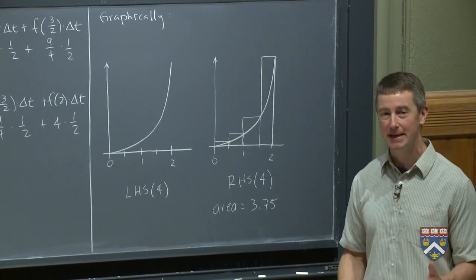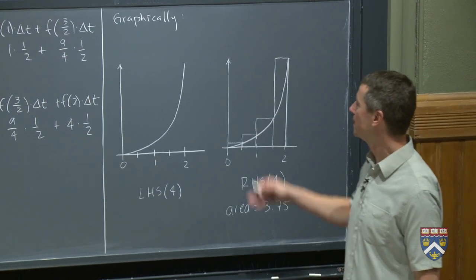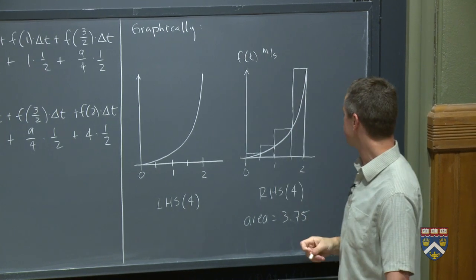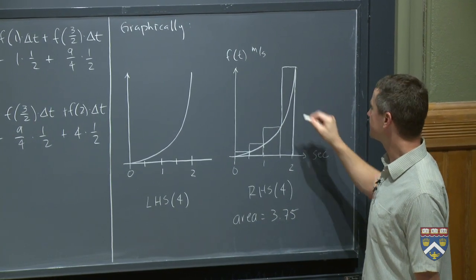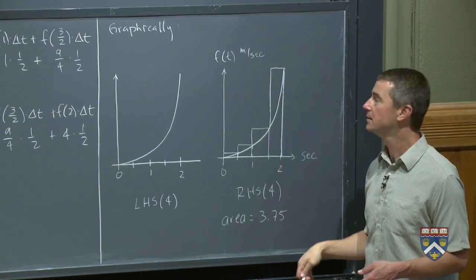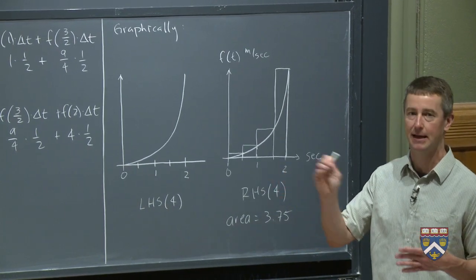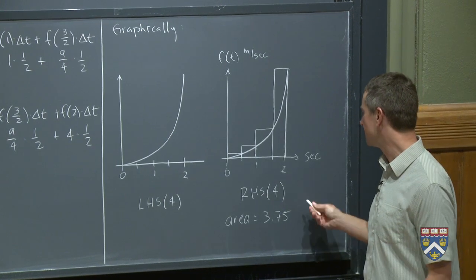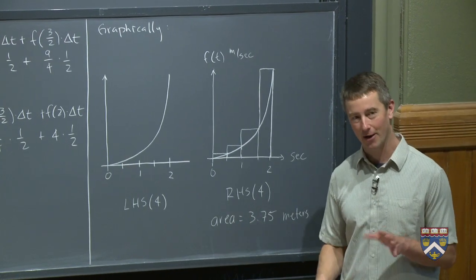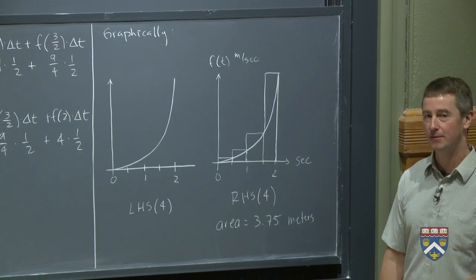So the area of these rectangles added up is 3.75 meters. Now, you might say, I've never seen an area measured in meters before. Why is this measured in meters? Well, what are the units on the function f of t up here? Its units are meters per second. And what are the units on t down here? Its units are seconds. So in each of these cases, we're taking a vertical distance, measured in meters per second, times a horizontal one, measured in seconds. And when you multiply meters per second times seconds, you just get meters. So it might sound a little funny to say that the area is 3.75 meters, and maybe we're using the word area a little bit more broadly than we should, but this does represent 3.75 meters.